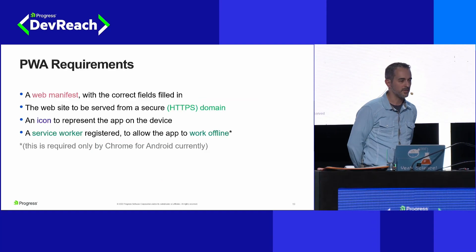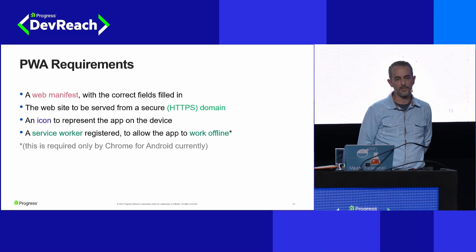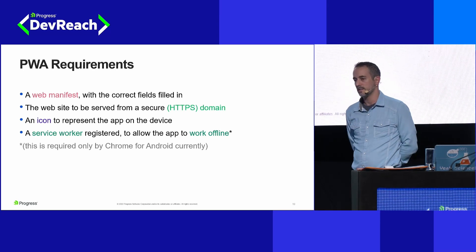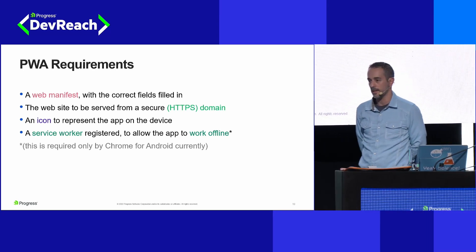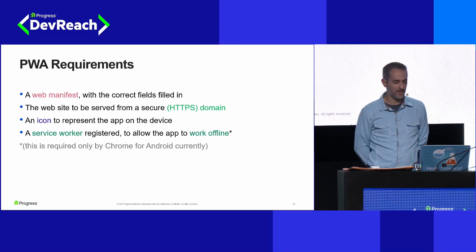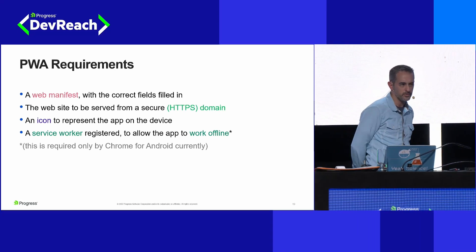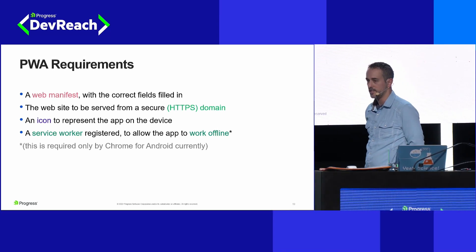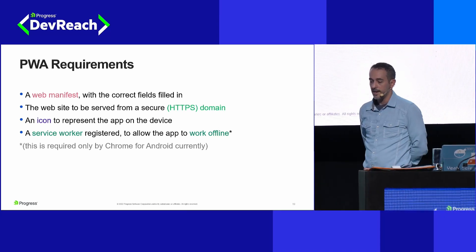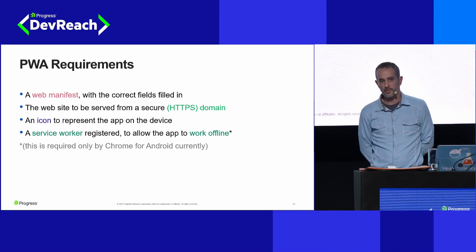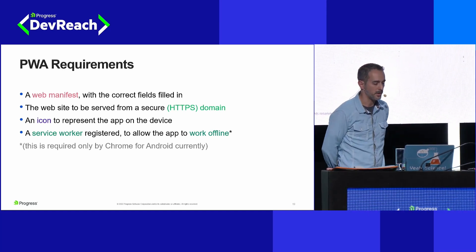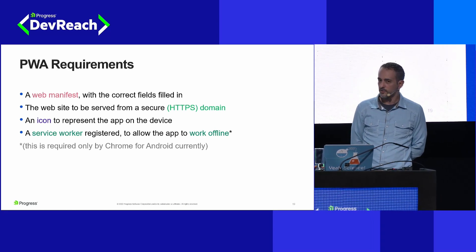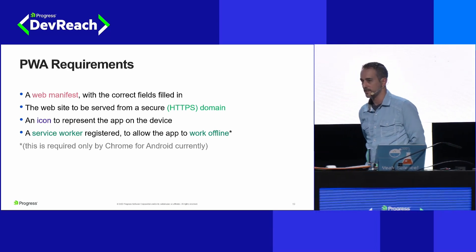Every PWA has to meet a set of requirements before it's allowed to be called a PWA. Browsers like Edge and Chrome will accept it and let you install it. It has to have a web manifest file, it has to be behind an HTTPS domain, it has to have an icon file that represents what the home or desktop icon would look like on the device, and it has to have a service worker that allows the application to work offline.